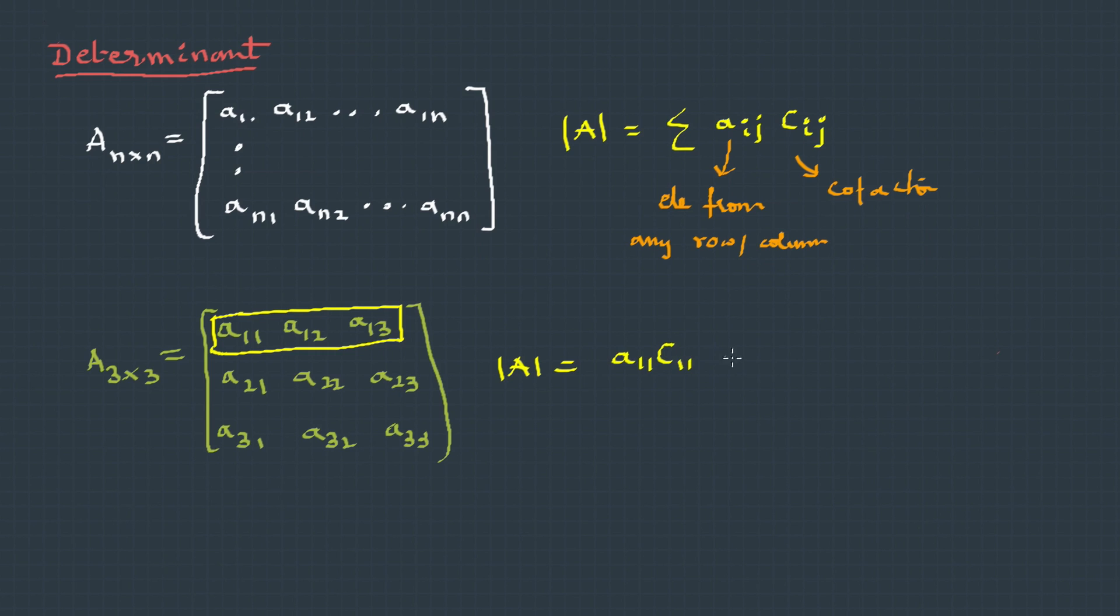then a13·C13. It's not necessary that we have to pick up only the first row. We can take any of the rows or even columns.